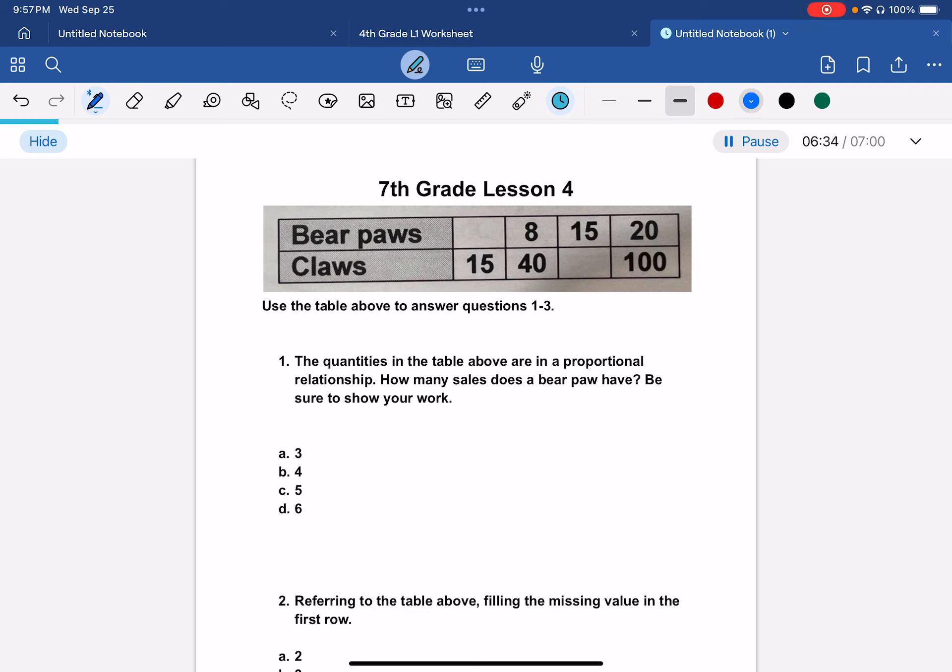So we know that these are connected, so the ratio would be 20 out of 100, which is basically 2 out of 10, which is 1 over 5.